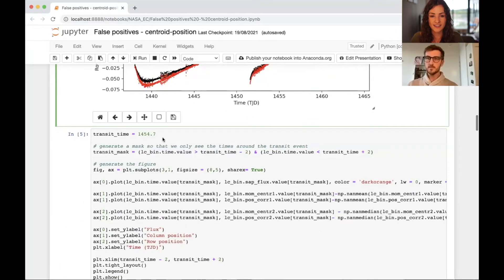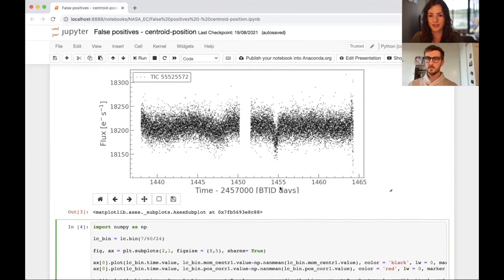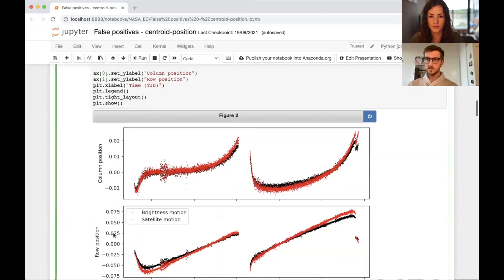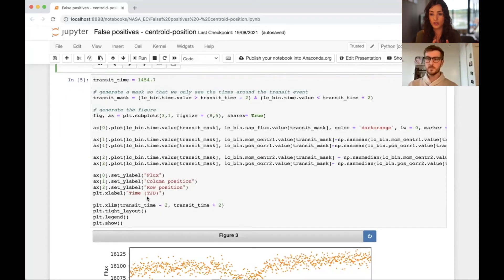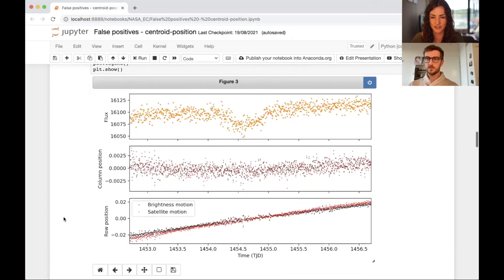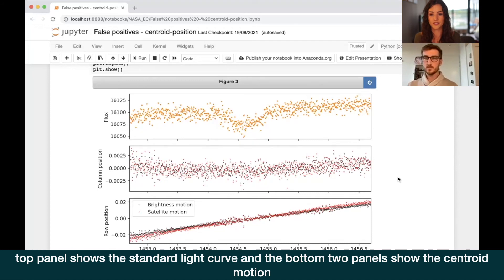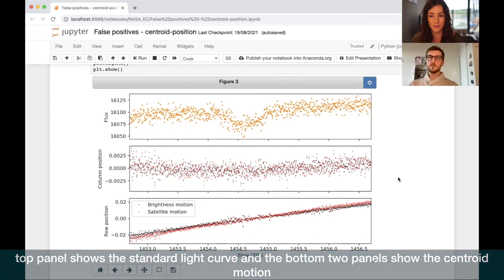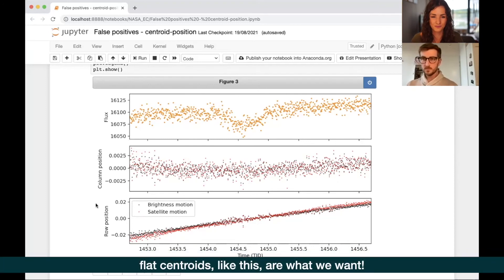So what we do is we define the time of the transit event. So if we go back up to this plot, the time is around 1455. We enter that time down here. And we can plot just the centroid positions along with the light curve around that time. The code does that automatically for you. And here we see what it's doing in the row and the column position. And we can see that is nice and flat. There is nothing happening in there. And that is exactly what we want for a not false positive scenario. Okay, great.